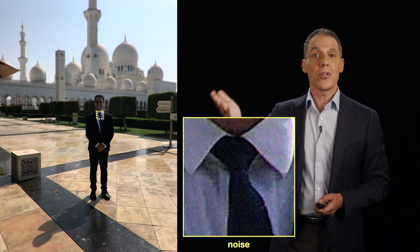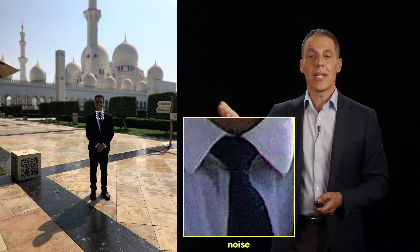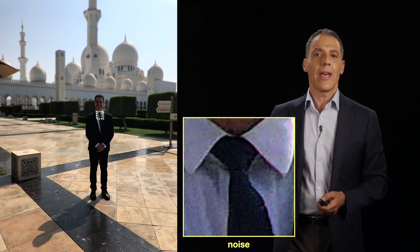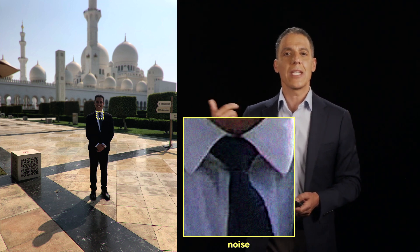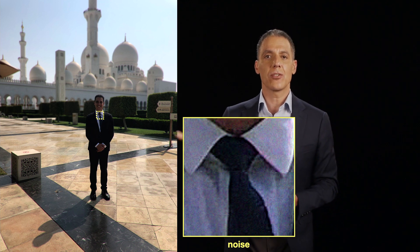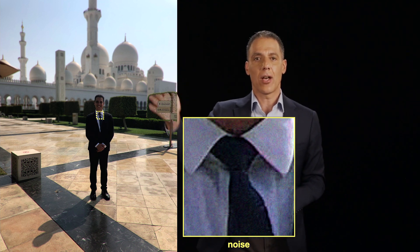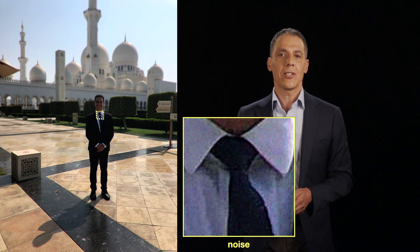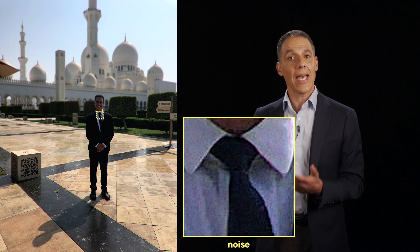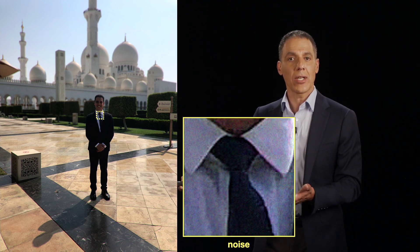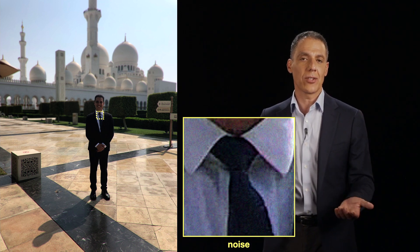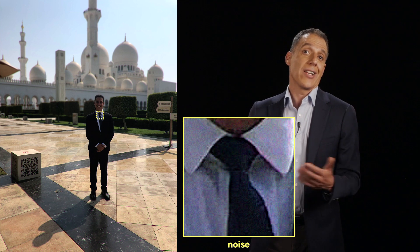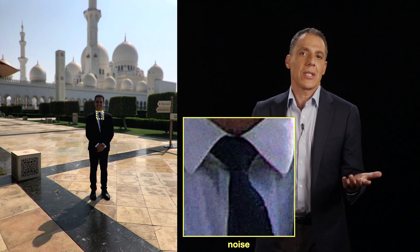We know where the noise comes from. It has to do with the sensitivity of the sensor and the imperfections of converting light from an analog signal into a digital signal. It can somewhat be controlled by how bright the scene is and what the ISO is, and in some cases it can't be controlled.